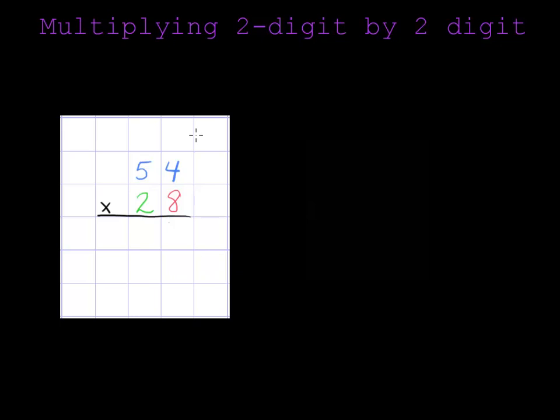Hi, in this video we're going to learn how to multiply a two-digit number by a two-digit number. First of all, one thing that I want you to notice is that I'm doing this problem on grid paper, and that's because it's very helpful to line up our numbers in columns when we're working on grid paper.